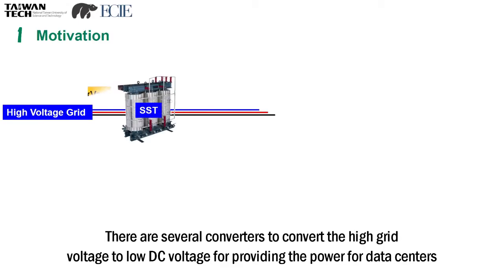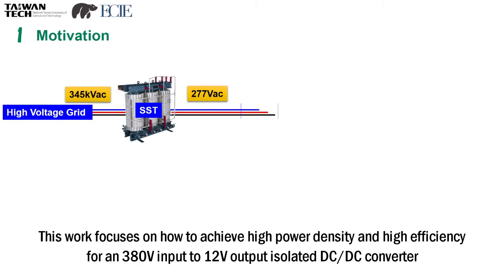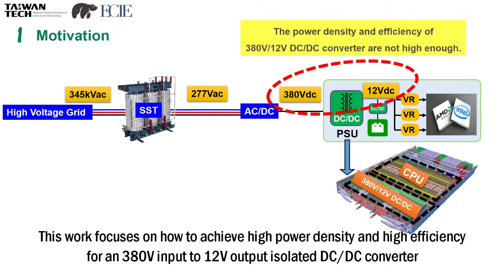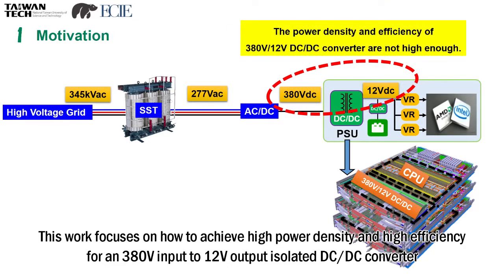There are several converters to convert the high grid voltage to low DC voltage for providing power for data centers. This work focuses on how to achieve high power density and high efficiency for a 380V input to 12V output isolated DC-DC converter.